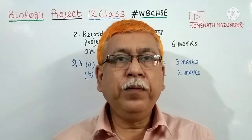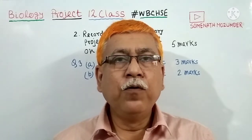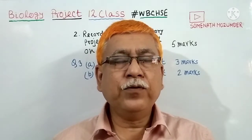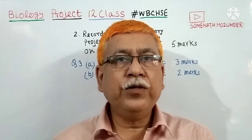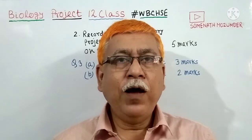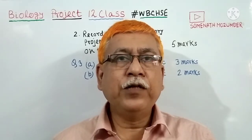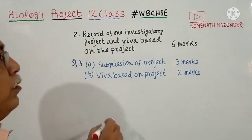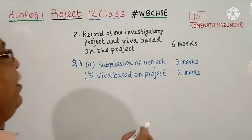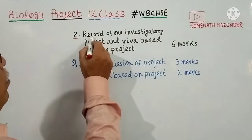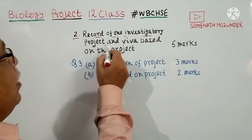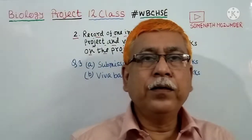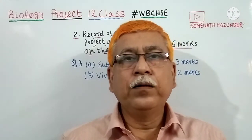Biology Project for Class 12, as per the syllabus of West Bengal Council of Higher Secondary Education. You have to prepare one investigatory project and submit it during the exam. If you go through the syllabus of 12th Class Biology Practical, you will find at number 2: record of one investigatory project and viva based on the project, with a maximum allocation of 5 marks.